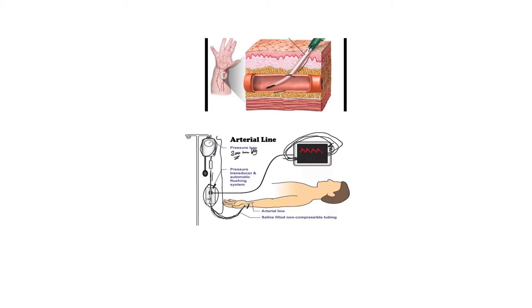An arterial line can be placed in any artery, but the most common sites used in the ICU are three: the radial artery, which is the most common; the brachial artery; and the femoral artery. The kit used for femoral placement is different from the one used for radial and brachial, but ultimately they all work the same way.